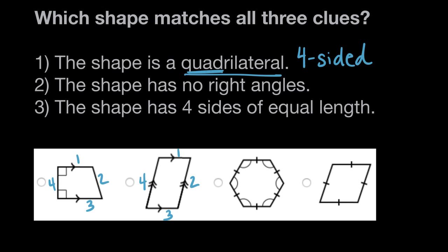Shape three has one, two, three, four, five, six sides, so it is not a quadrilateral. It's a six-sided shape or a hexagon, so we can rule that one out. It doesn't match clue one, so there's no way it can match all three clues.